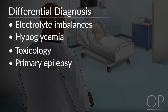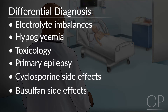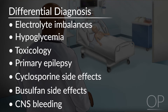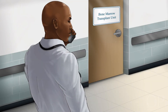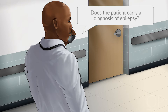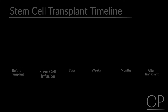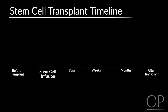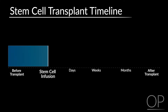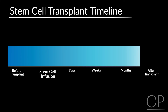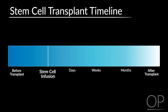Additionally, what you should think about in the transplant population is cyclosporine side effects, busulfan side effects, and CNS bleeding. What do you want to ask the nurse on the phone? Are the vital signs stable? Does the patient carry a diagnosis of epilepsy? And particular to transplant: what day, relative to stem cell infusion, is the patient? This is something you want to know about every stem cell transplant patient when you receive sign-out — knowing whether they're prior to, shortly after, or several weeks to months out from stem cell infusion will impact your differential and your interventions.